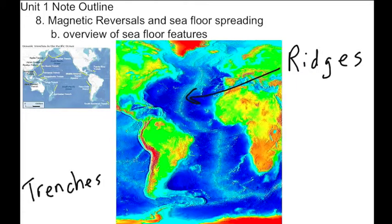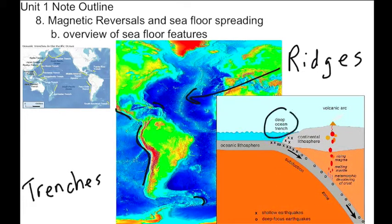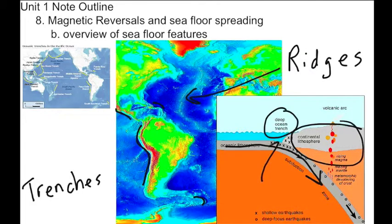The next feature we'll discuss are the trenches. Trenches are typically right along the side of continents. Trenches are extremely deep because they are actually points at which the ocean floor subducts and goes underneath continental crust, and so at that point it gets very deep. Trenches are very deep parts of the ocean where the ocean floor is actually moving underneath the continents.